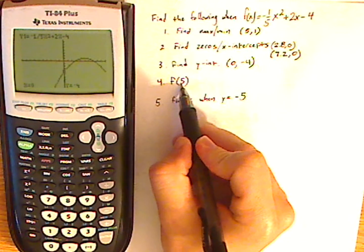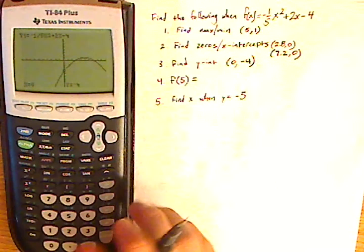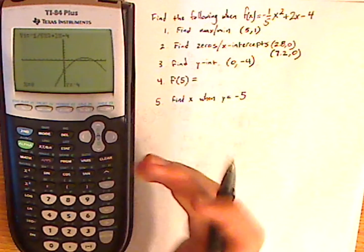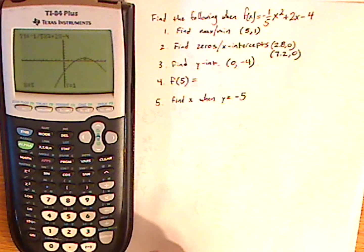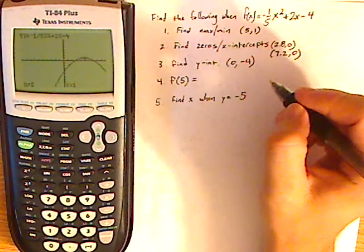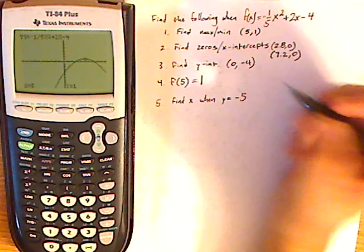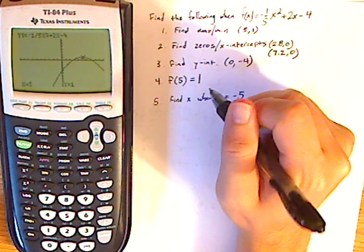Now I can do the same thing with f of 5. I can find out what that is just by tracing it. So again, I'm going to push trace. I don't have to do that. And then just click 5. So y equals 1. Oh, look at that.